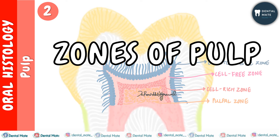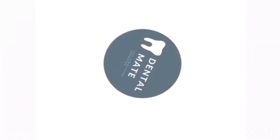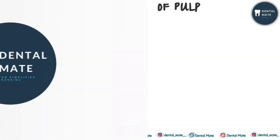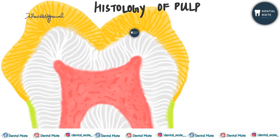Hello everyone, welcome to Dental Mate. Today in this video we'll be talking about a structural feature of pulp — the zones of pulp, or the histology of pulp. The zones of pulp demarcate a specialized odontogenic region in the pulp. It circumscribes the pulp peripherally and has four different layers.